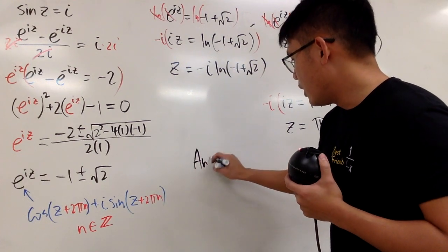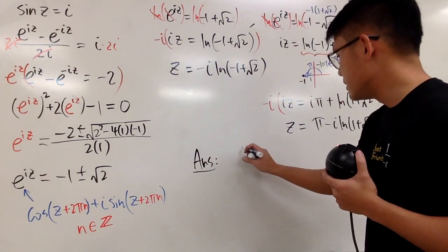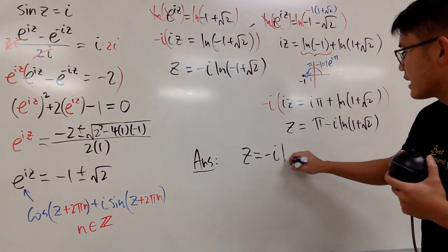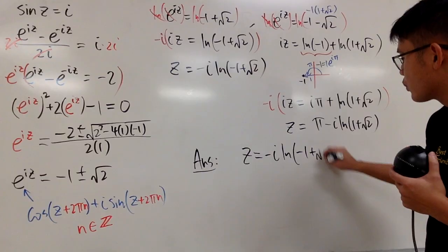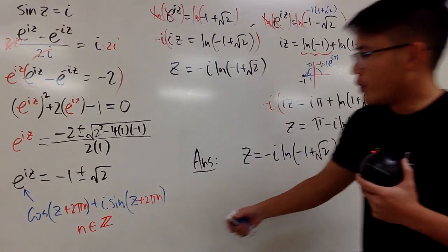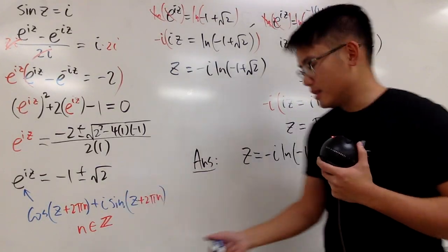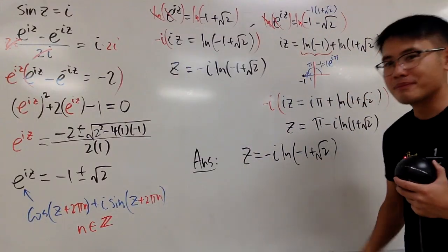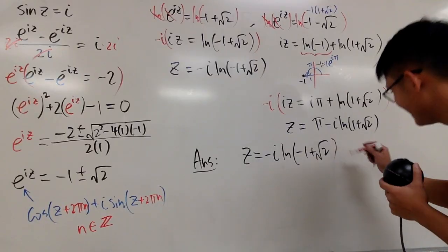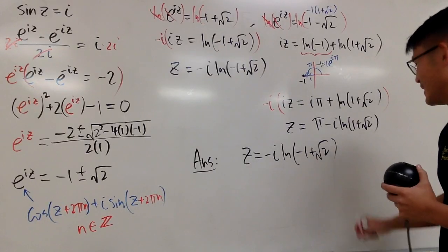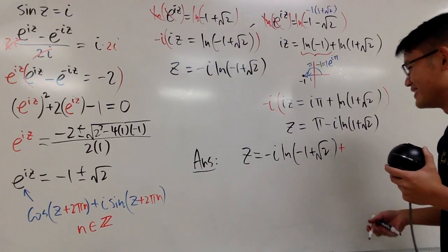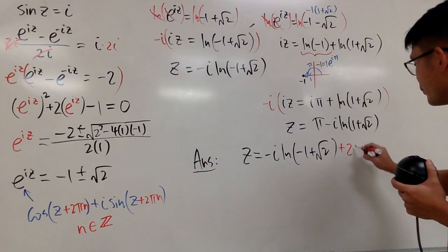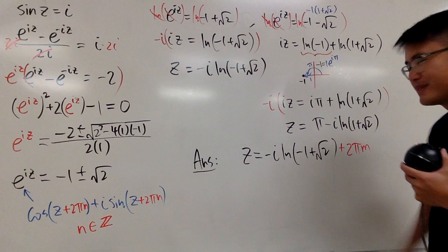So finally, I'll just put up all the answers. First, this is going to be z equals, that's the first one, negative i times ln of negative 1 plus square root of 2. Well, I'll use n right here. Or, let me just, you know, dedicate this to pi m, Dr. Pi m. Thanks for watching. Hopefully, he doesn't see that. I don't know if he watches my video or not. Anyway, I will just put down 2 pi m, okay, for pi m, right?